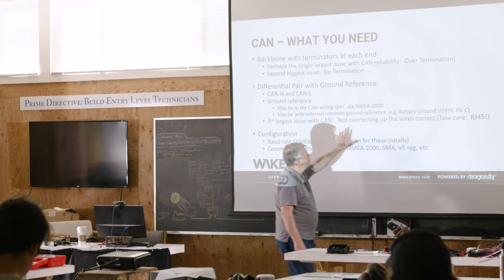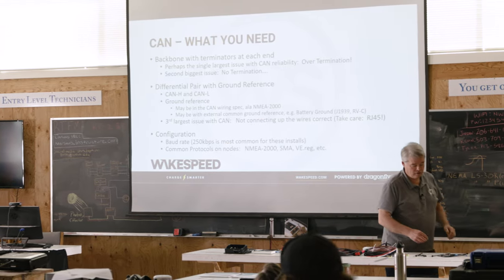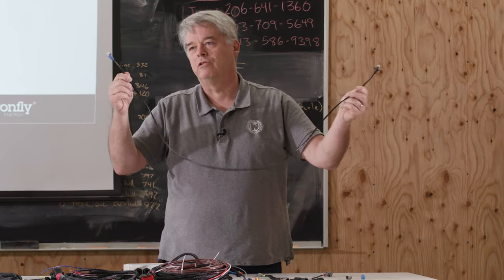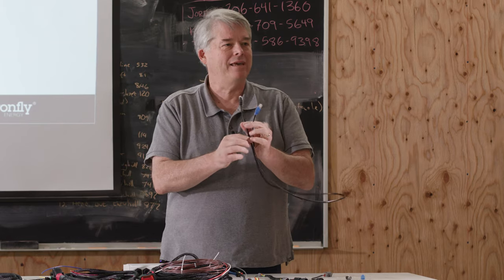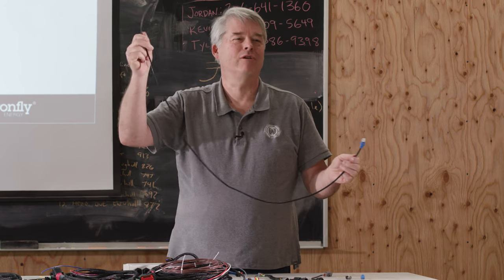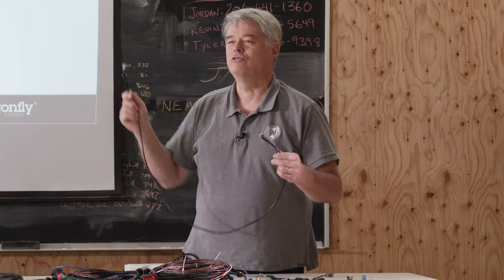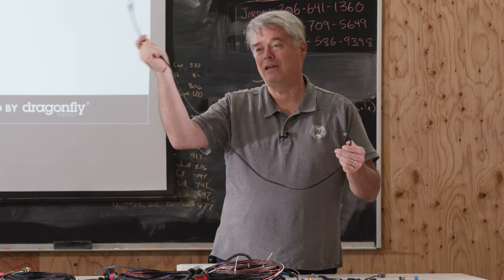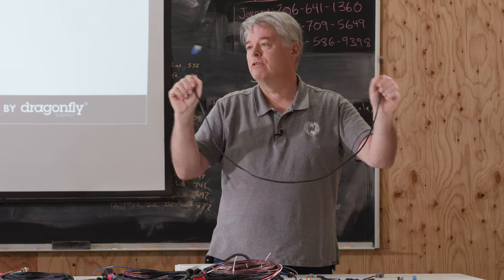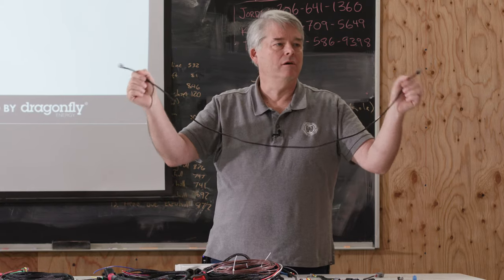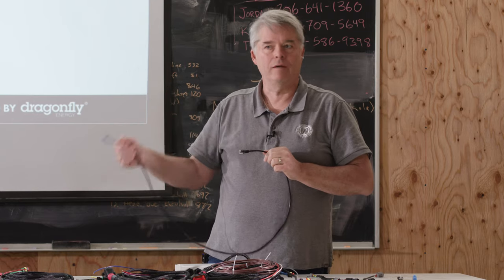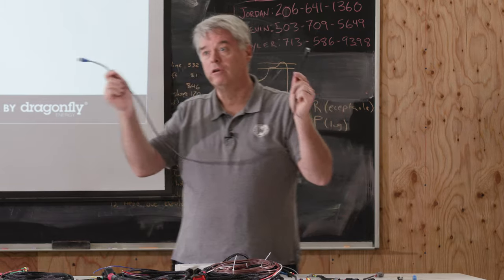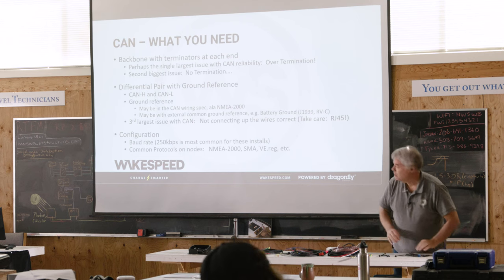Another big issue is CAN high and CAN low not being connected — specifically the crossover cable issue with Victron. The RJ45 CIA spec allows power to be transmitted over the bus, so displays can be self-powered just by the Cat5 cable. Victron uses those power pins for their CAN high and CAN low. So when you plug a Victron cable into a WakeSpeed, you're applying battery power to the wrong pins — in a 48-volt environment, that gets really fun.